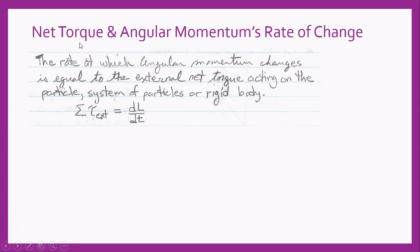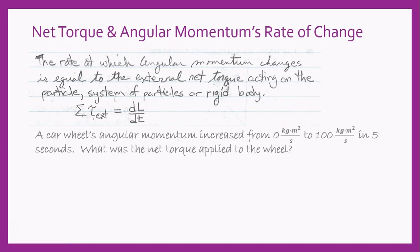Let's talk about net torque and how it affects the rate of change of angular momentum. The rate at which angular momentum changes is equal to the external net torque acting on the particle, system of particles, or rigid body. So the sum of all external torques — net torque — is equal to dL/dt, the change in momentum with respect to time.